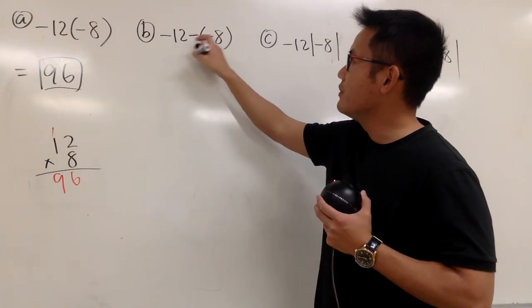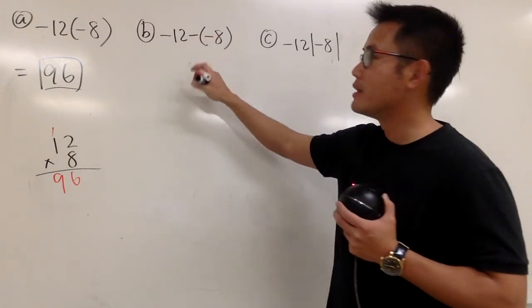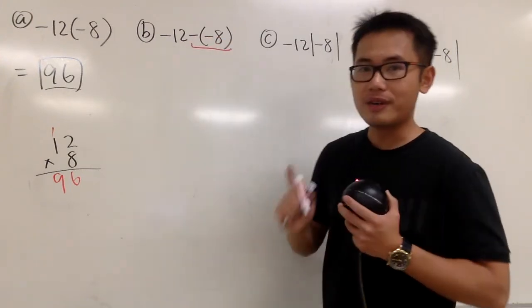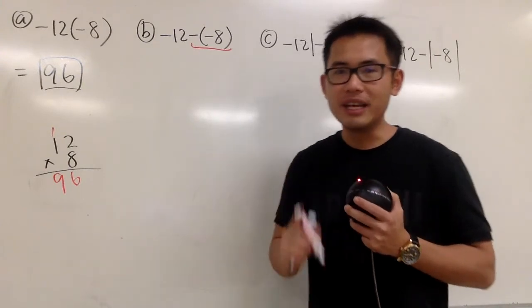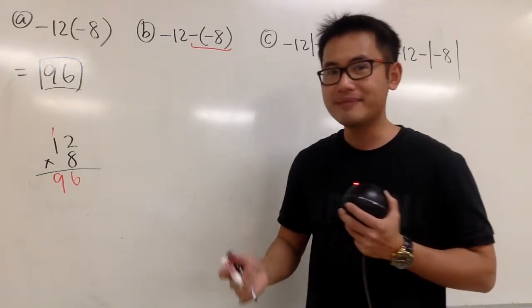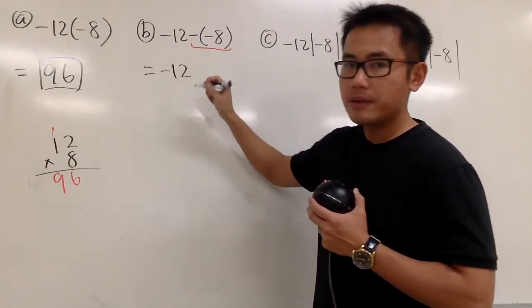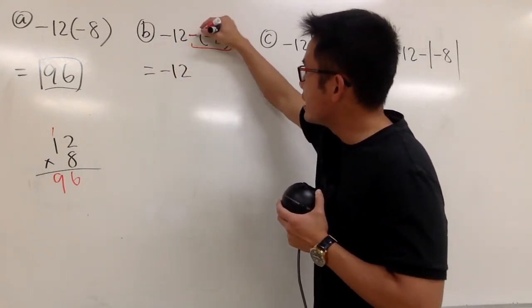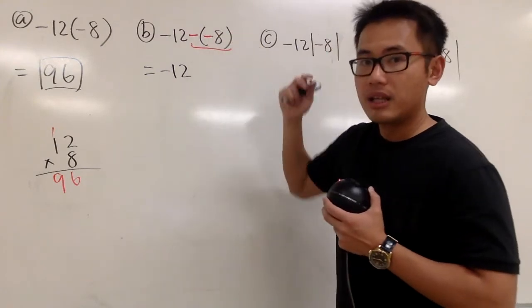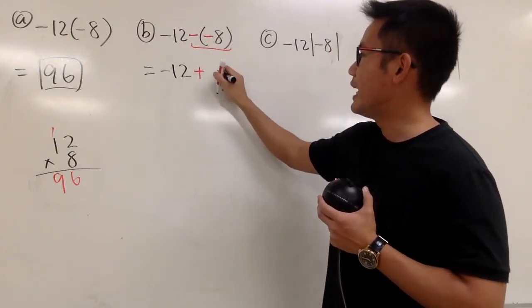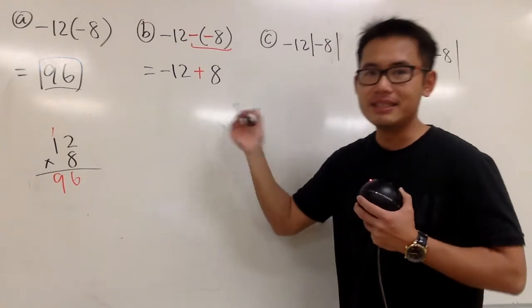We have a negative in front of this negative right here. You are going to make sure you do the following: negative times a negative gives us a positive, right? So this is -12. And once again, negative times negative gives us positive. And then we still have the number 8.